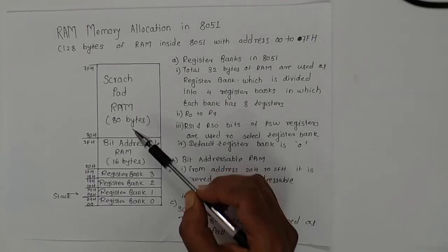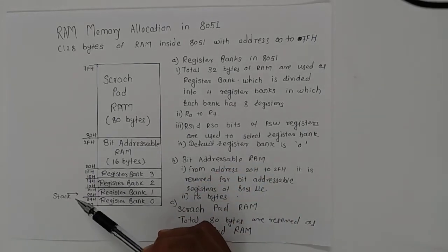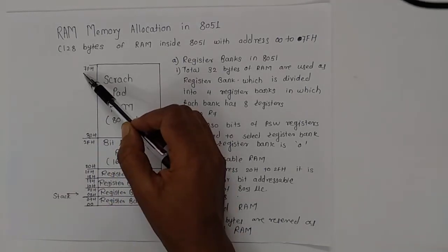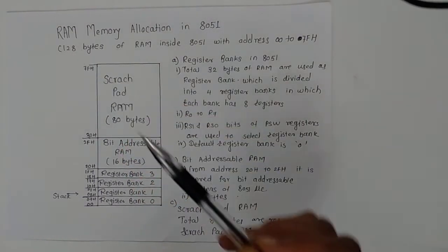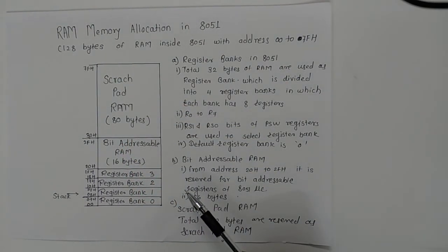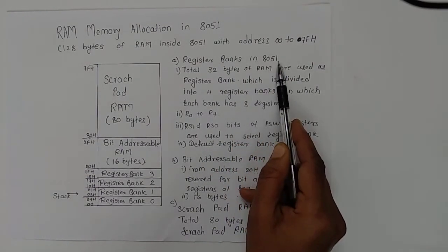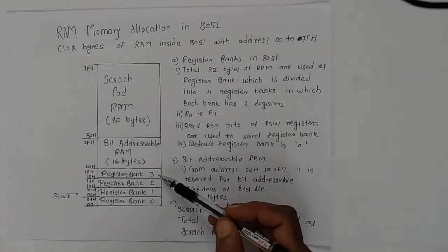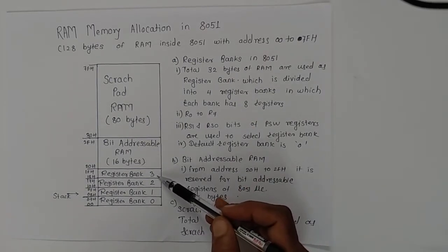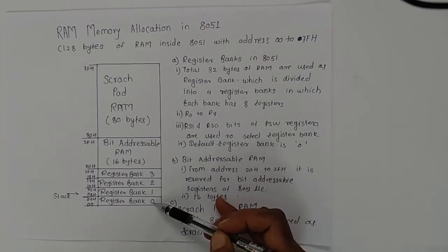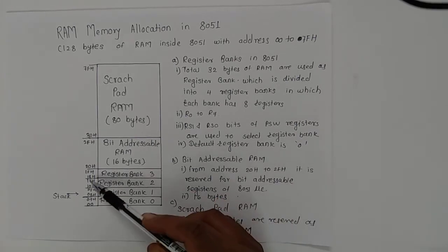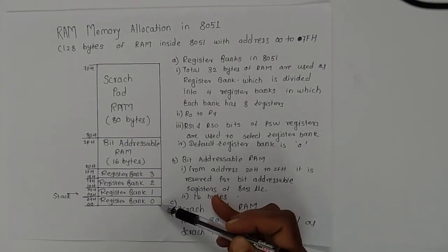The total address space is 128 bytes which is from 00H to 7FH. Now just look at register bank in 8051. If you look at the diagram, you can see there are 32 bytes reserved as register bank.